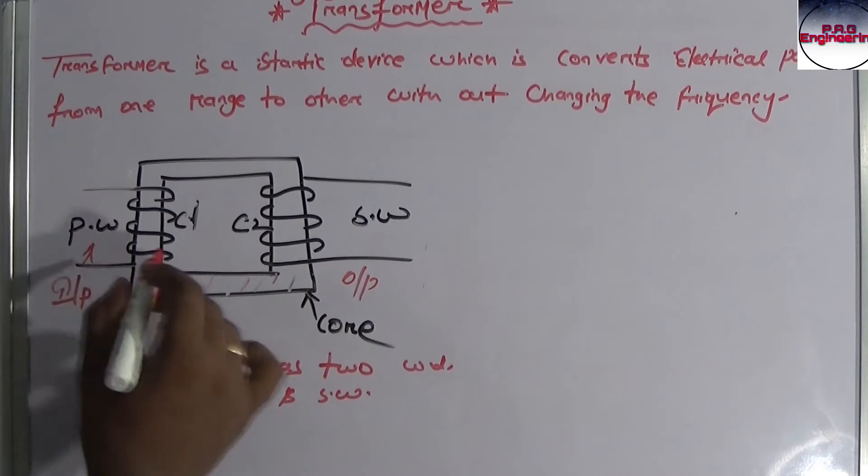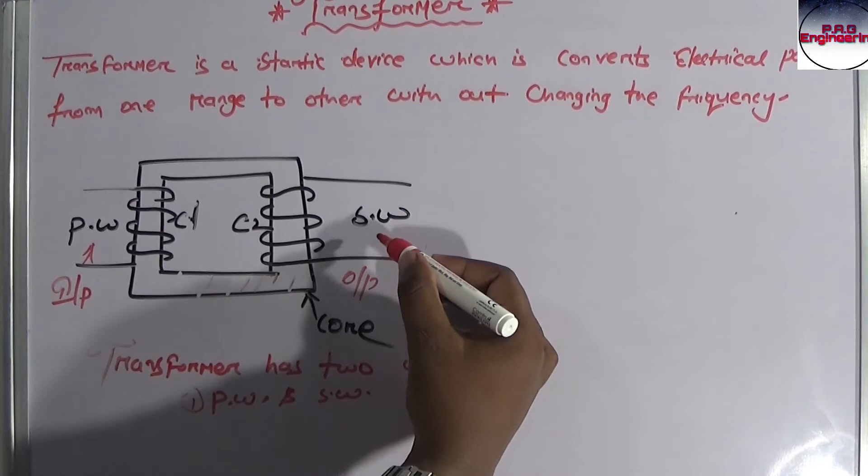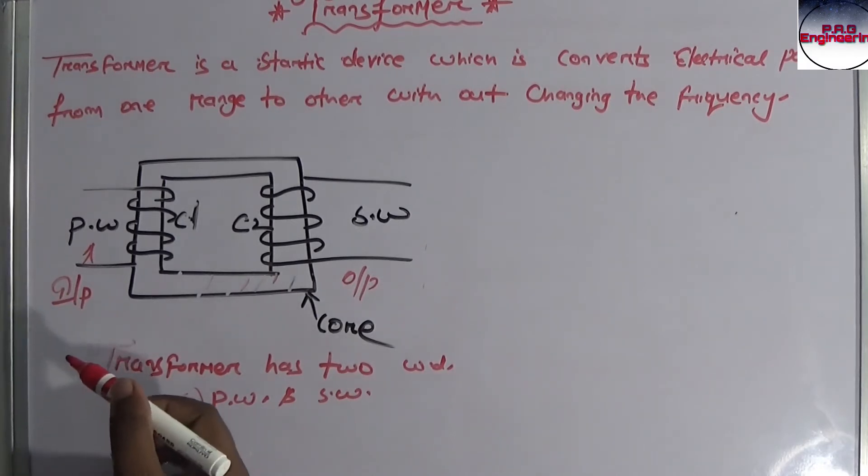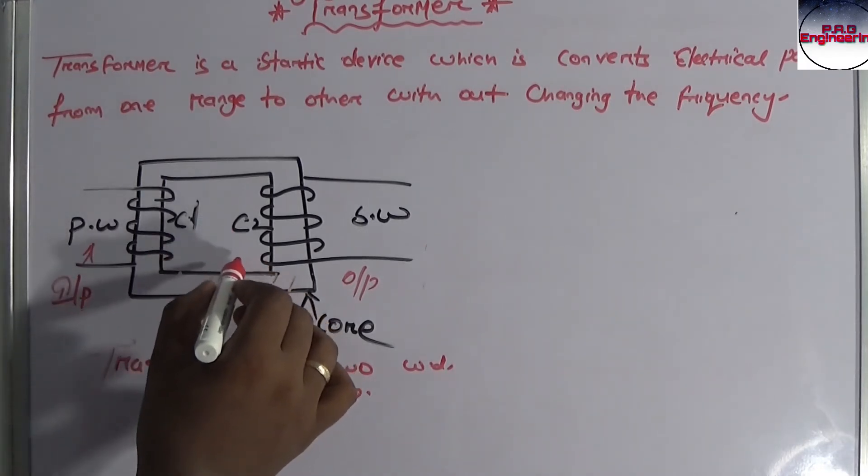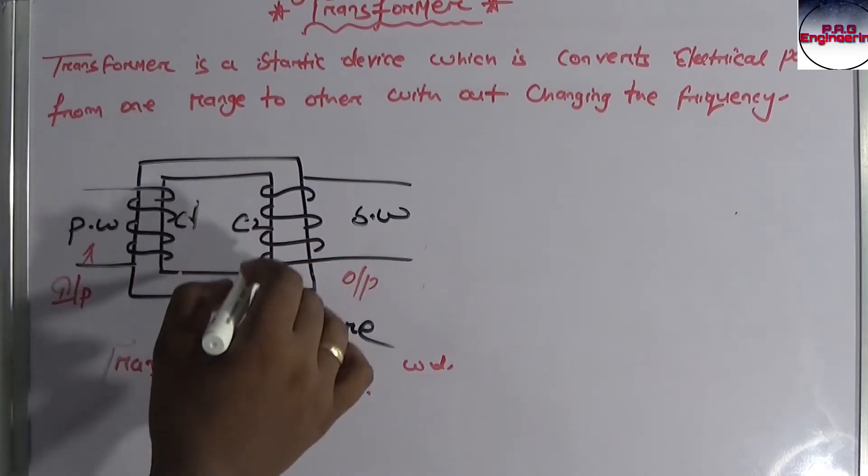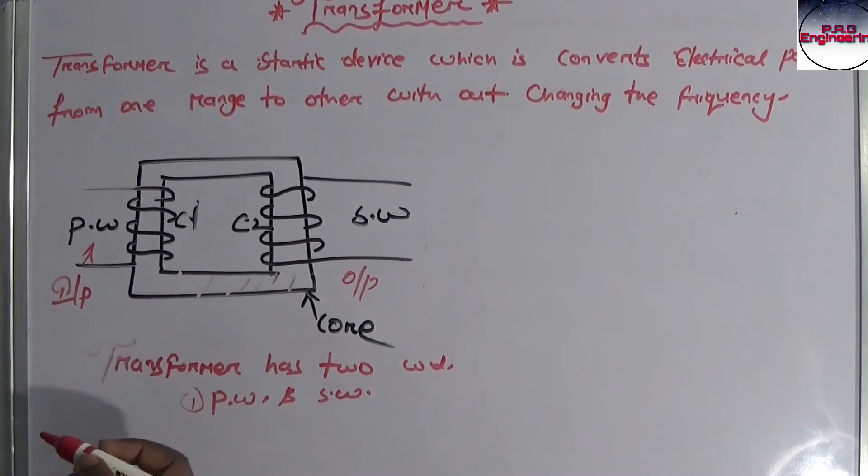Primary winding on input side, output side connection is secondary winding. In transformer, both the windings are connected over a single core from magnetic field. This is the magnetic field, this is the core.